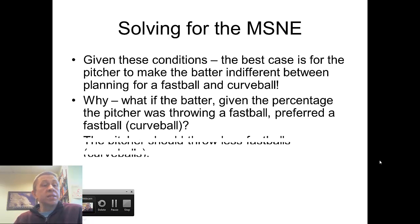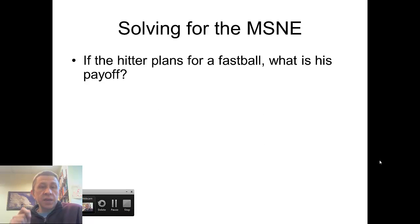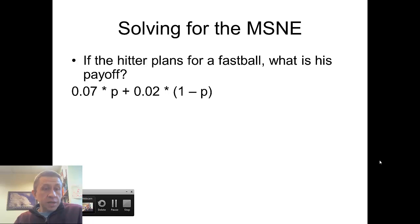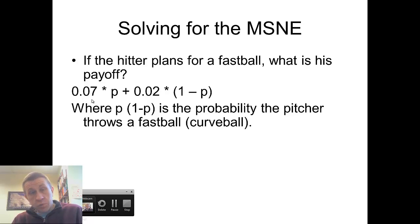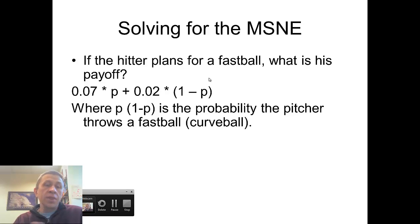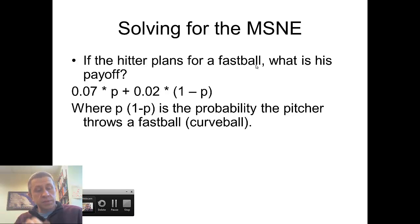What is the expected payoff if the hitter plans for a fastball? 7% of the time the hitter will get a hit if the pitcher throws a fastball, and we represent that probability as P — the probability the pitcher throws a fastball. So P percent of the time the pitcher throws a fastball and the hitter gets on base 7% of the time. The remainder of the time, 1 minus P, the pitcher's throwing a curveball, and the hitter gets on base 2% of the time, 0.02. So the hitter's expected value from planning for a fastball is 0.07 times P plus 0.02 times (1 minus P).